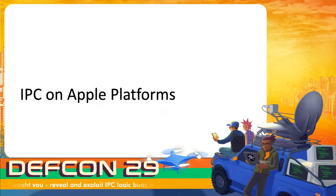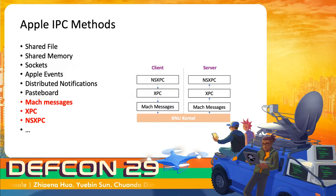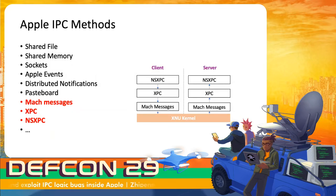Before introducing IPC logic vulnerabilities, let's start with some fundamental knowledge of IPC on Apple platforms. Apple IPC has different specific implementation methods, including shared files, shared memory, and sockets, which other systems support as well. There are also some unique to Apple such as Mach messages, Apple events, and distributed notifications. However, the latest and most advanced IPC methods on Apple platform are XPC and NSXPC. Apple implements them on top of Mach messages. We will walk you through the principles and usages of them.